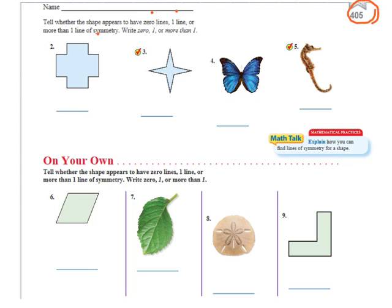So this one, if I were to fold it straight down here, down the middle, the left and the right would be the same. But I could also fold it straight across here, and it would be the same. And I could also fold it across like this, or across like this. So this says that it has more than one line of symmetry.